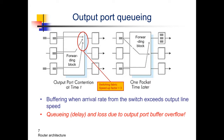How can you obtain this speedup factor? There are different techniques: you can build a parallel electronic architecture where the system is physically parallelized, or you can play with time — for example, oversample the data coming to the switching fabric so that in one packet time the switching fabric is working N times faster.